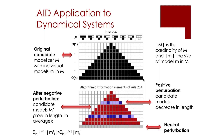The cone defines the region of influence of the initial condition. Nothing outside the cone is affected by the initial condition, and the cone defines the only region that can be potentially causally influenced by the initial condition, both in space and time. Remember that time flows downwards.